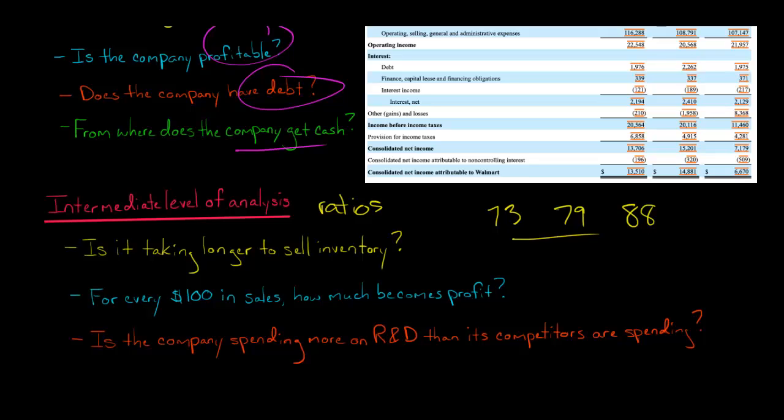You can look at, so again, that would be the days to sell inventory, which is calculated from inventory turnover, which is a ratio. Another ratio you can calculate is profit margin. So profit margin we'll talk about. Profit margin is for every $100 or 100 euros in sales, how much of that actually turns into profit. Because remember, sales are very different from profit. You might have $100 or 100 euros in sales, but only $2 or 2 euros in profit. And so then you would have a 2% profit margin.